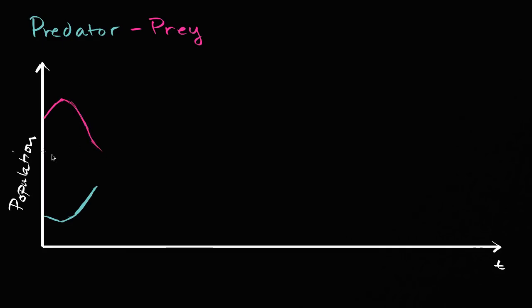All the way to a point where if the population of the prey gets low enough, the predators are going to start having trouble finding food again. And so their population might start to decrease. And as their population decreases, what's going to happen to the prey?